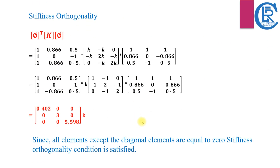Similarly, we can check the stiffness orthogonality of the given structure. We already have the transpose φᵀ matrix and the stiffness matrix. Upon multiplication of these three matrices using a calculator, taking k common to simplify, we get a result where all off-diagonal elements are close to zero. This confirms that the stiffness orthogonality condition is also satisfied.